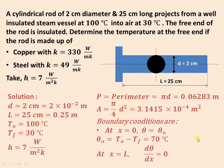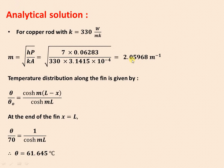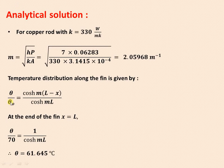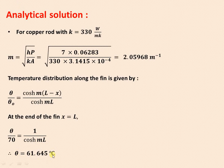For the copper rod, k = 330 W/m·K. The parameter m is given by √(hP/kA), and that value is 2.05968 m⁻¹. The temperature distribution along the pin fin is given by θ/θ₀ = cosh(m(L−x)) / cosh(mL). At the free end where x = L, this reduces to 1/cosh(mL), and substituting the values gives a temperature difference of 61.645°C for the copper rod.